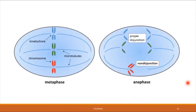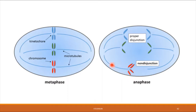Here's what non-disjunction really looks like. When chromosomes are lined up in metaphase and preparing to separate, you expect half to go in one direction and half in the other. But with non-disjunction, that doesn't happen — the whole thing gets dragged to one side. The cells that result from this division end up with one cell having too much DNA and the other having too little: one with an extra copy of the chromosome and the other with a missing copy.